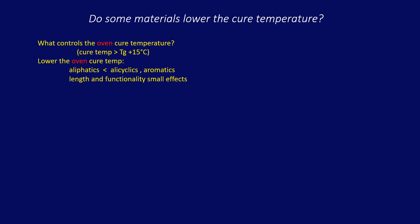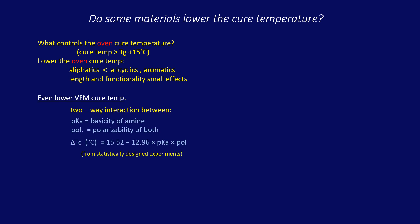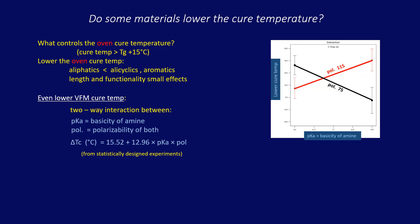We've seen that what matters for cure temperature is what happens at the end of the process, when the viscosity is highest. To design a low VFM cure temperature with high thermal stability, the data shows that there's a strong dependence between basicity and polarizability. This graph shows that either low basicity and high polarizability or high basicity and low polarizability works best. Either choice gives a lower cure temperature than with an oven.